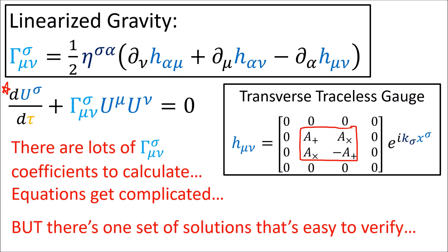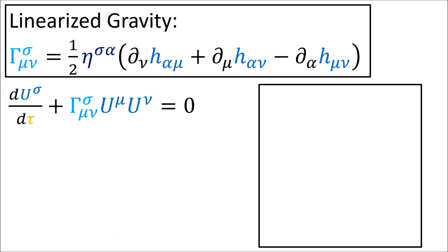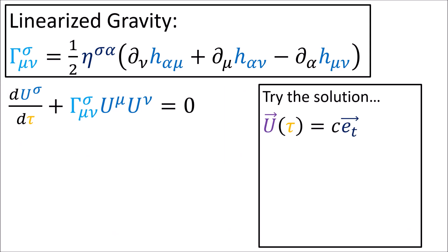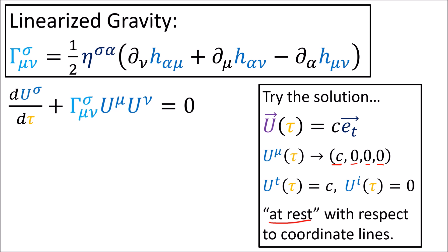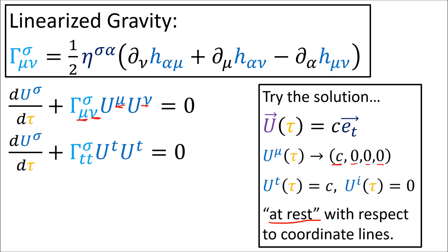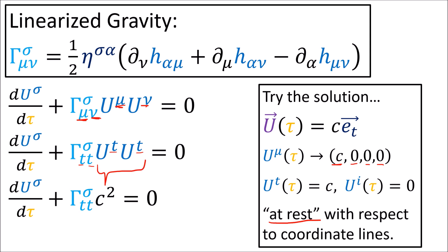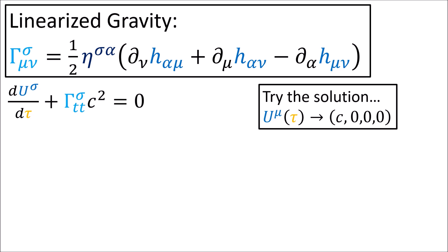But there's one set of solutions to the geodesic equation that's easy to verify. Let's look at world lines whose four-velocity vectors point completely in the direction of the time coordinate. So for the four-velocity, the time component is c and the spatial components are all zero. This is basically a world line that's at rest with respect to the coordinates in space, in the sense that the spatial coordinates are constant and it's just moving through time. So for these two summations over mu and nu, only the terms with time indices survive. And since u^t equals c, this becomes c squared.